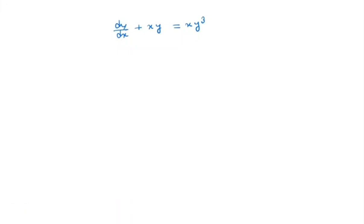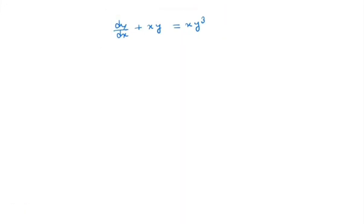Hi everyone, welcome to my channel. We will try to solve the following ODE: dy/dx plus xy is equal to xy³. Note that it's a Bernoulli's equation. We've already discussed how to solve Bernoulli's equation in my previous video — I will leave the link in the description box. Now we will divide both sides of the equation by y³.